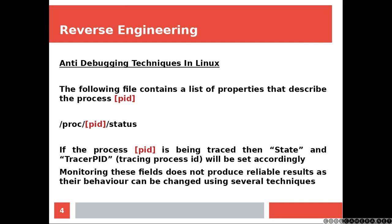If you are a Linux user, you would probably already know what this directory does. The following file, status, contains a list of properties that describe the process PID — that would be the ID of your process. Now, if your process is being traced, then state and tracer PID, which is the ID of the tracing process, will be set accordingly by the operating system.